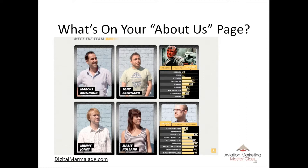Here's a really good About Us page example. Number one, it has pictures of people, which tests as one of the best and most engaging types of content. People like to know who they're doing business with and they like to put a face behind a conversation. If they met you at a trade show six months ago, they want to connect that memory to a person. The way this one does it is with little baseball cards — if you click on them, they flip over and you can see their superpowers.